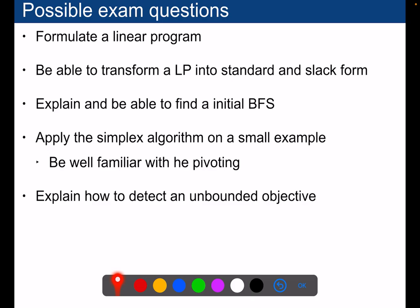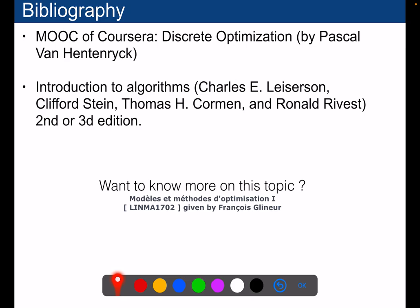For the exam, you should be able to formulate a linear program, transform it into standard form and slack form, explain and find a basic feasible solution, apply the pivoting operation to improve a solution and move to the next one that improves the objective function, and explain how to detect unbounded objectives, which can happen for some ill-conditioned problems.